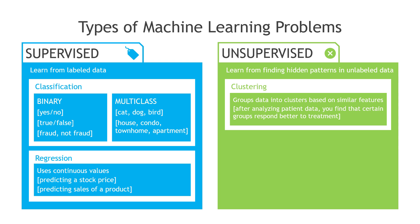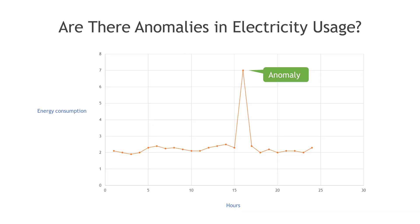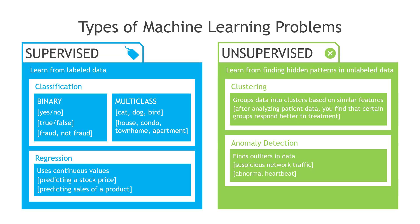You're grouping data into clusters based on similar features. Another example would be maybe you've got a bunch of patient data, and when looking at different features of the data, you find that you've got one group that responds well to treatment and one who doesn't. Next up: anomalies or outliers. Looking at this graph, it's easy to see that we have an anomaly for energy consumption around hour 16, and then it drops back to normal. There's definitely something here that would need to be investigated. Anomaly detection is another great example of unsupervised learning — you could also use this to find suspicious network traffic or abnormal heartbeats.